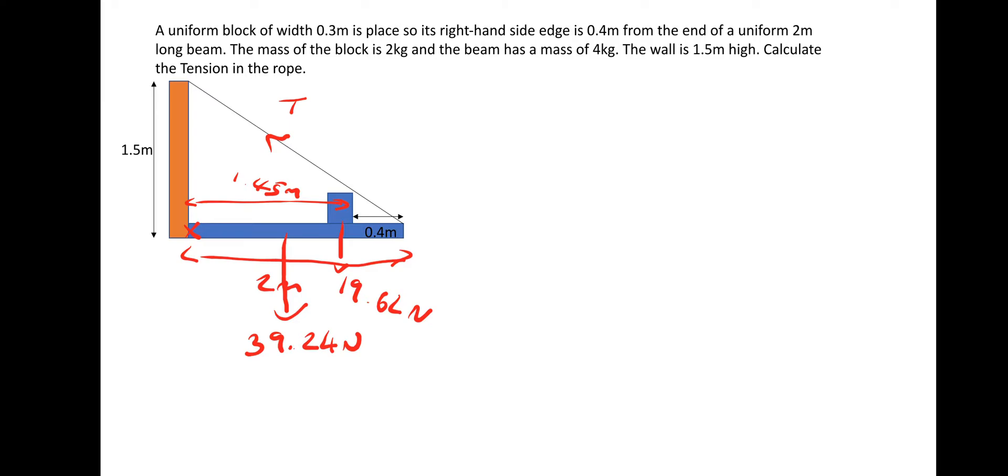So what we can do now is use moments to find the vertical tension. So let's do moments. So clockwise is equal to anti-clockwise. So clockwise, we've got the 39.24 times 1 meter. So that gives us a moment of 39.24. And then we need to add. The other moment going clockwise is the 19.62 N from the block multiplied by 1.45. And 19.62 times 1.45 is 28.5.